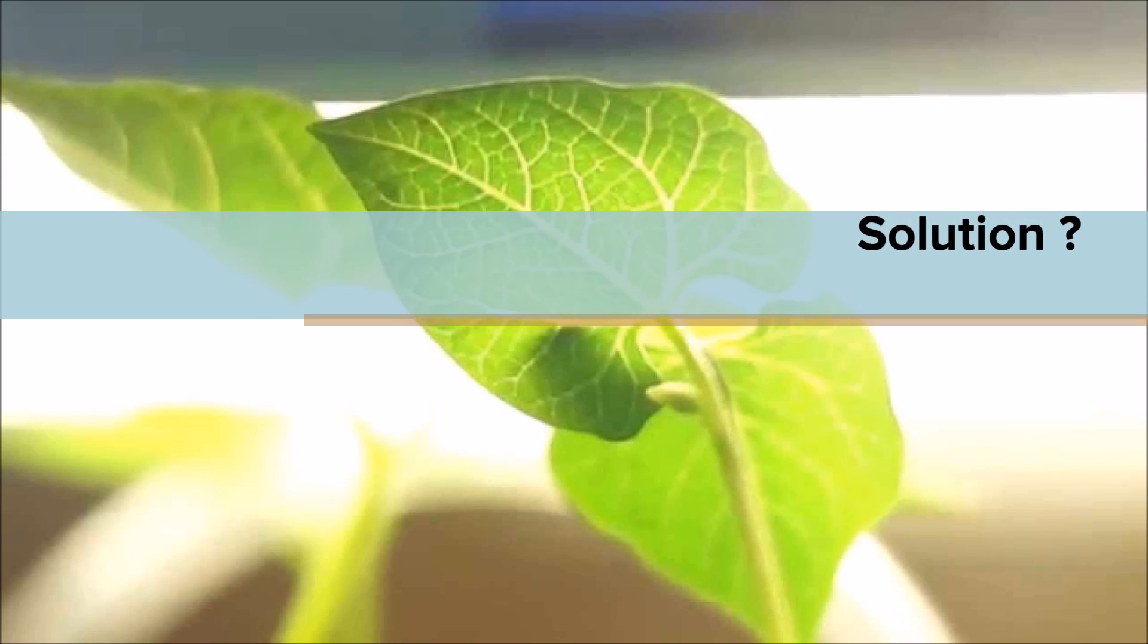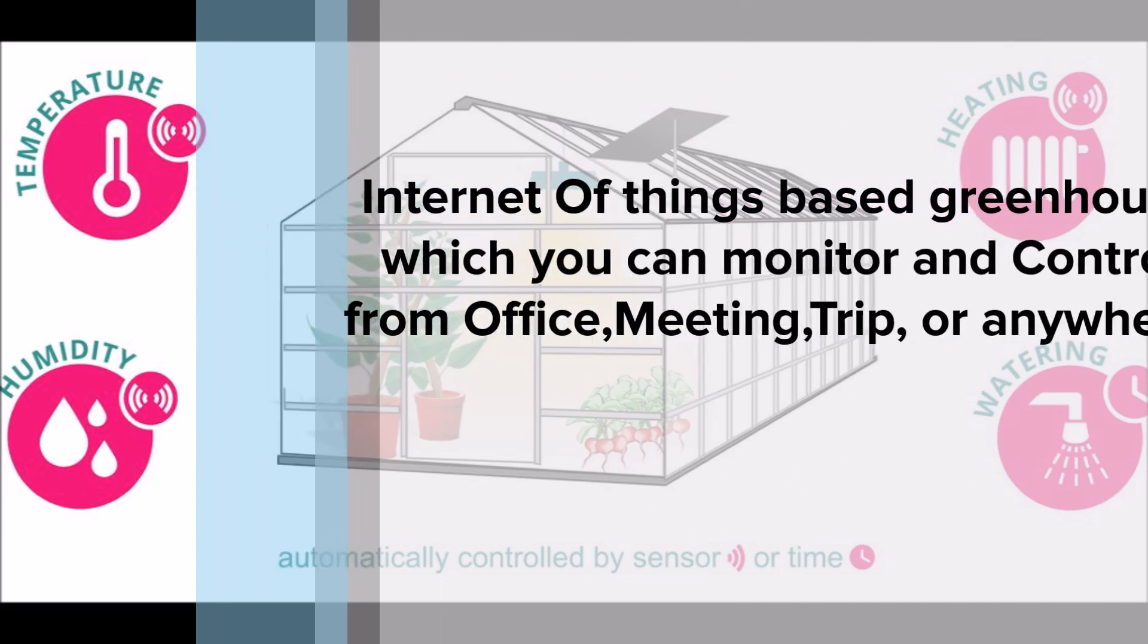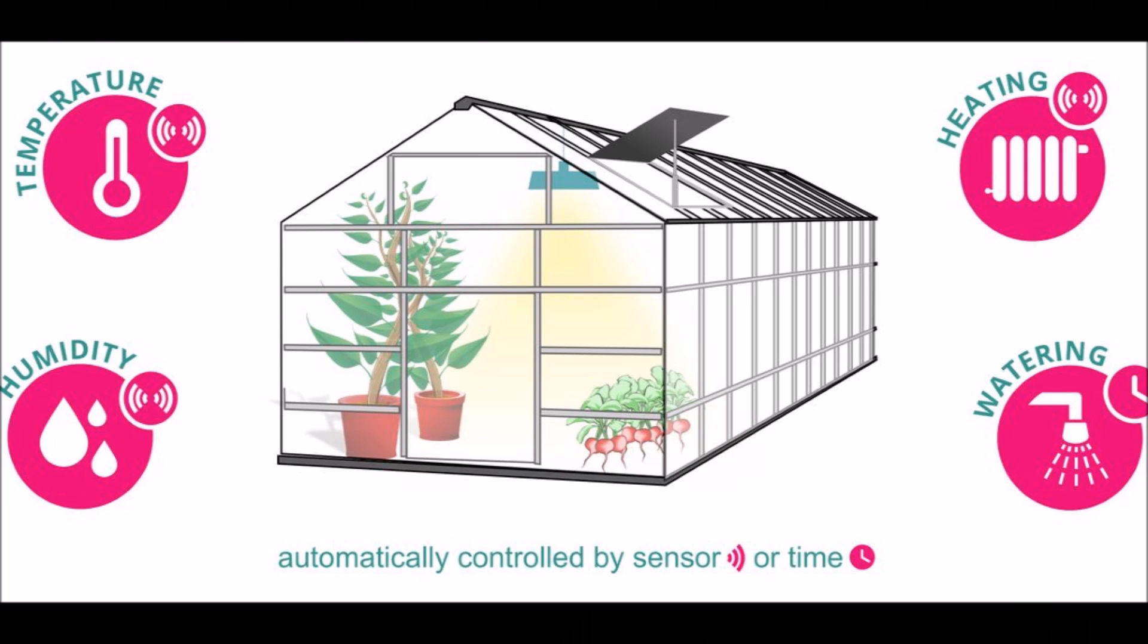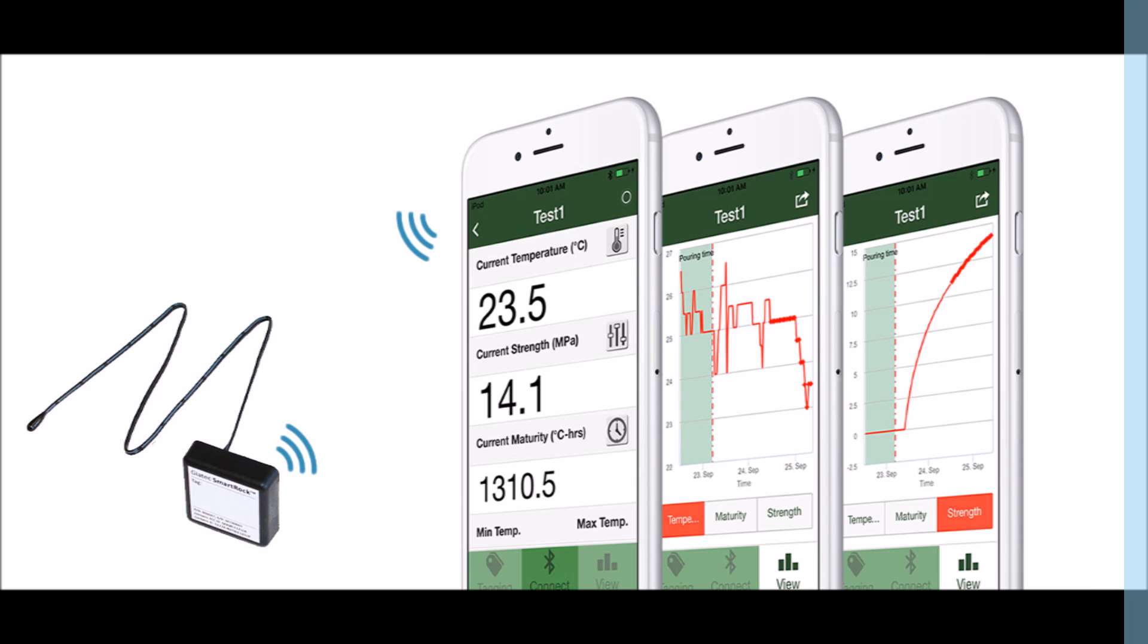Internet of Things based greenhouse which you can control from office meetings, trips, or from anywhere. You can monitor and automatically control temperature, heating, humidity, and also watering.